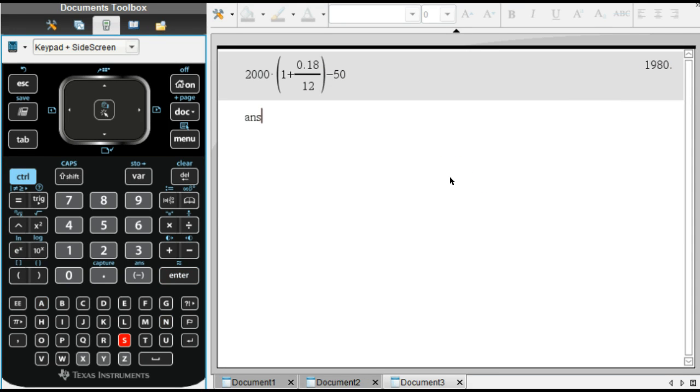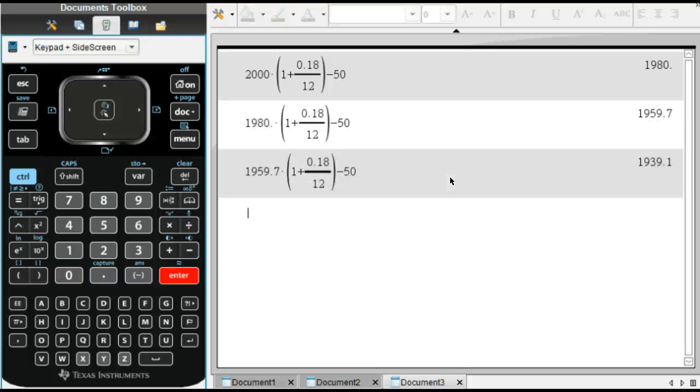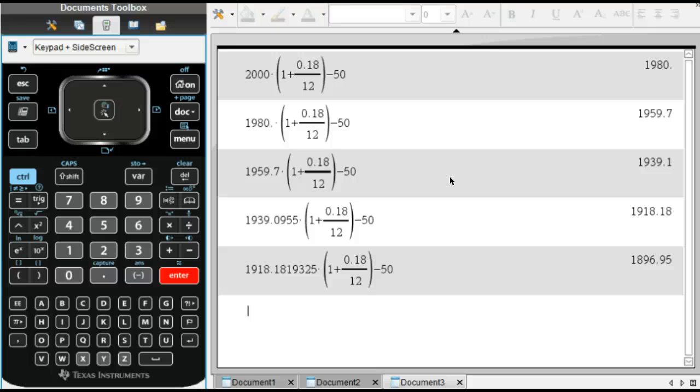What I can do is take the answer and multiply by the same thing, 1 plus 0.18 divided by 12, and then subtract 50. If I keep on hitting enter, that's all I'm doing is hitting enter. If I use the ANS button, this can take down my balance, and I can see what I owe after a certain amount of time. This might be the first month, second month, third month, fourth month, and so on.